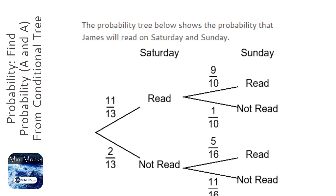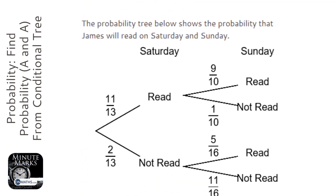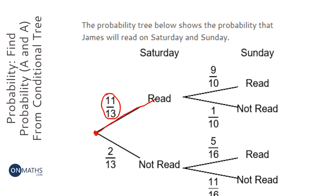For this question we need to find the probability that James will read on both days. We start here with a probability tree diagram and we go down the roads that will get us to where he read on both days, so he'll read on Saturday, passing this branch here.